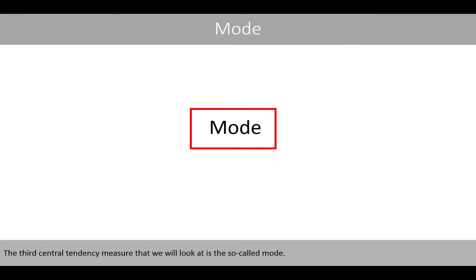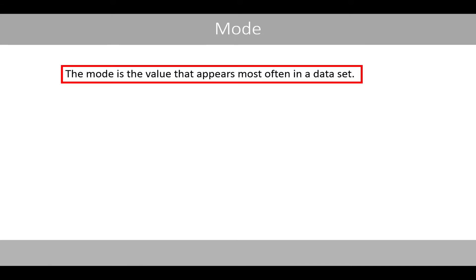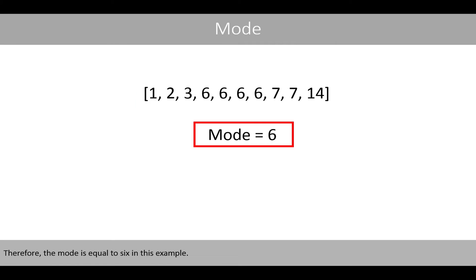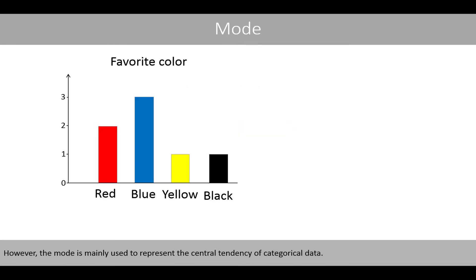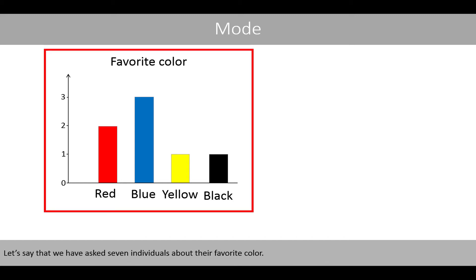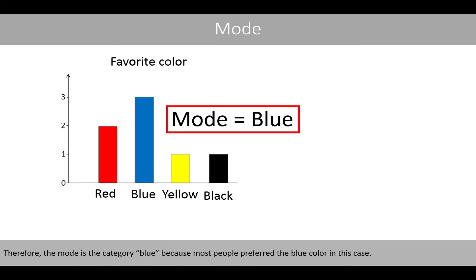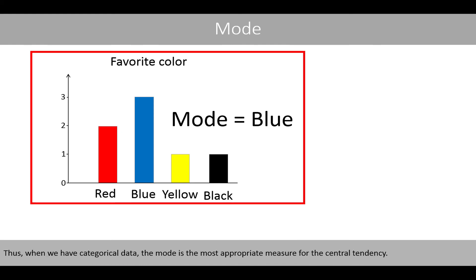The third central tendency measure that we will look at is the so-called mode. The mode is the value that appears most often in a data set. For example, suppose we have the following data — we can see that we have four sixes, and six is the most common value in this data set, so the mode is equal to six in this example. However, the mode is mainly used to represent the central tendency of categorical data. If we ask seven individuals about their favorite color and most people say blue, then the mode is the category blue. Thus, when we have categorical data, the mode is the most appropriate measure for the central tendency.